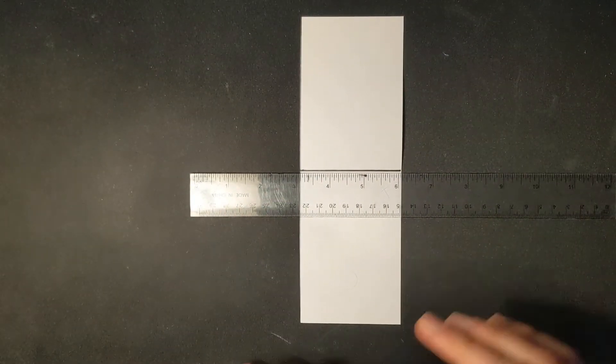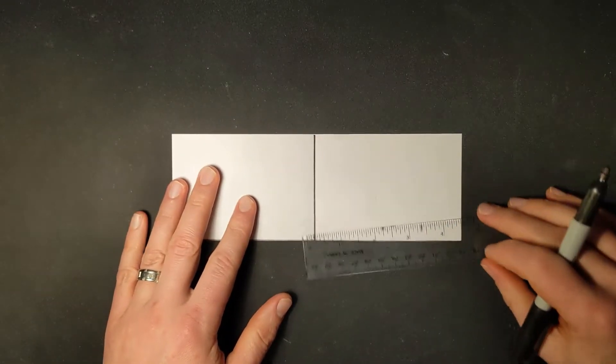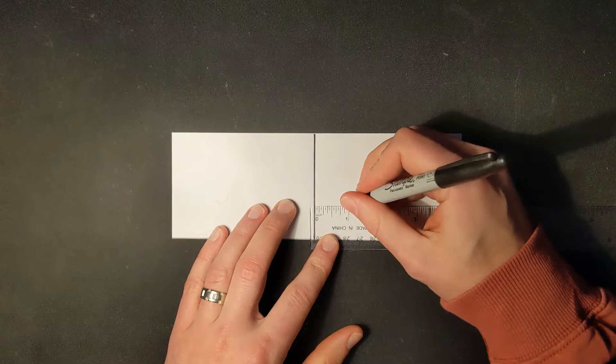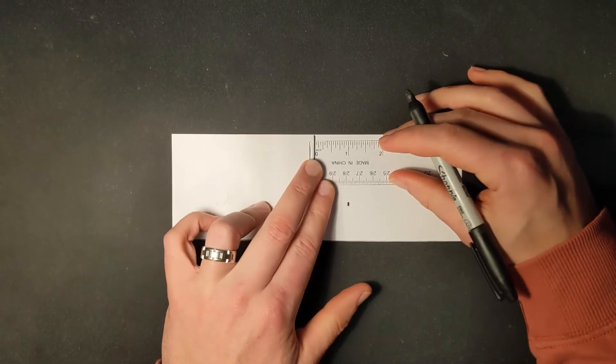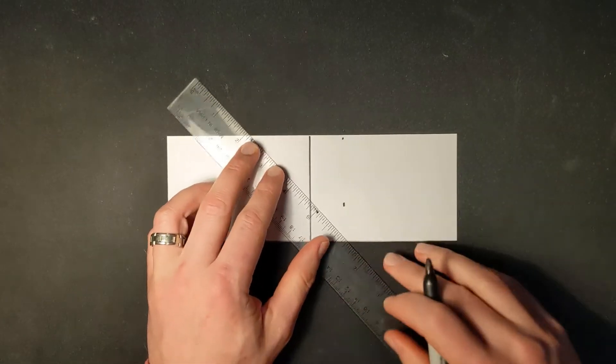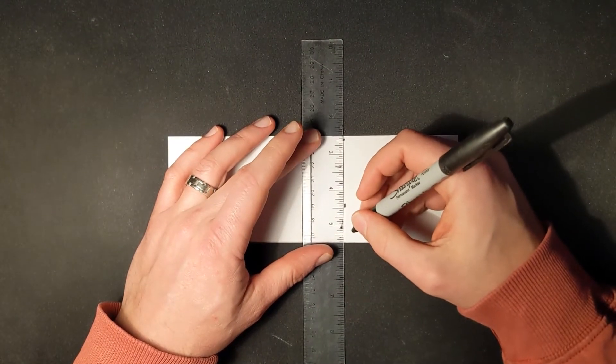Next step, I'm going to measure one inch from that crease. I'm going to measure it in a few spots here, a couple of spots, so then I can draw a line and know that it is exactly one inch from that crease that I made earlier.